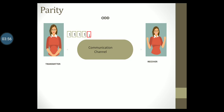She now sends this data across over the communication channel to the receiver. At the other end, the receiver gets the data and the parity bit. She checks the data to verify if it satisfies the agreed upon scheme of odd parity. She counts the number of ones and finds it to be odd, so she concludes that the data is sent correctly.